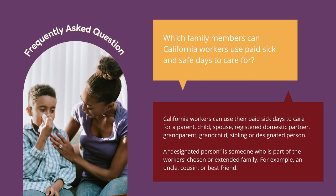A frequently asked question is: which family members can California workers use paid sick and safe days to care for? California workers can use their paid sick days to care for a parent, child, spouse, registered domestic partner, grandparent, grandchild, sibling, or designated person. A designated person is someone who is part of the worker's chosen or extended family — for example, an uncle, a cousin, or a best friend.